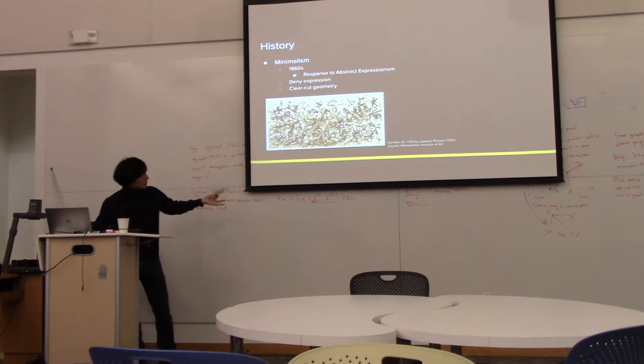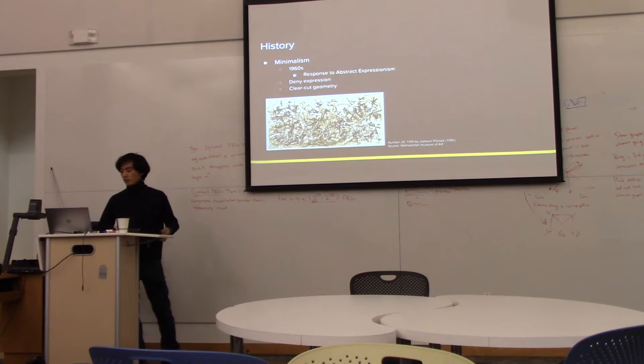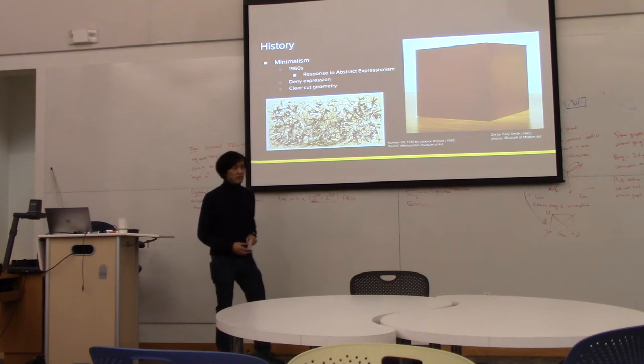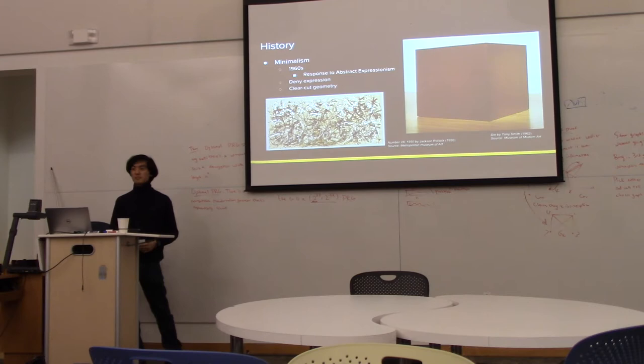Into the mid-1900s you see abstract expressionism, basically like these Pollock paintings — a lot of feeling going into art. There was a response to this, trying to say that art isn't just about feeling, that art can represent something more meaningful and realistic. That response was minimalism, which tried to deny any connotation to expression and had very clear-cut shapes. For example, there's a sculpture called Die by Tony Smith — very minimalist, very strong shapes.